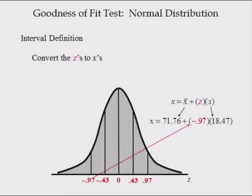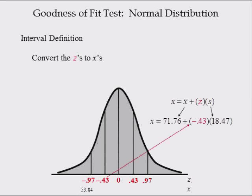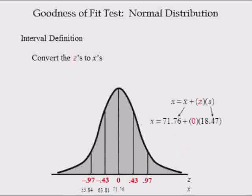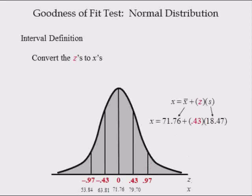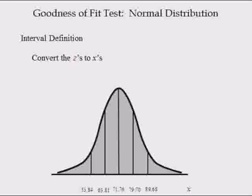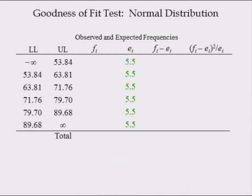Substituting the sample mean 71.67, sample standard deviation 18.47, and the first Z-value negative 0.97 yields an X-value of 53.84. Replacing the Z-value with negative 0.43 yields an X-value of 63.81. Replacing the Z-value with 0.43 yields an X-value of 79.7. Replacing the Z-value with 0.97 yields an X-value of 89.68. These X-values define the intervals of the test. The expected frequency for each interval is 5.5, and summing these values equals the sample size of 33.